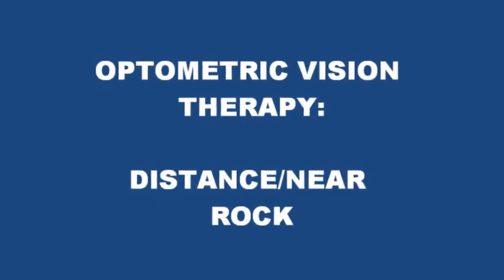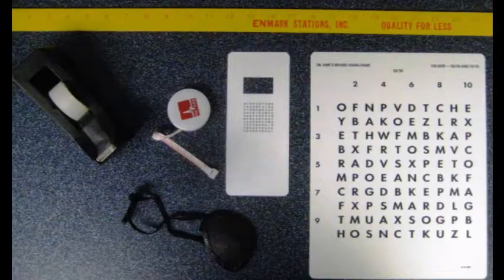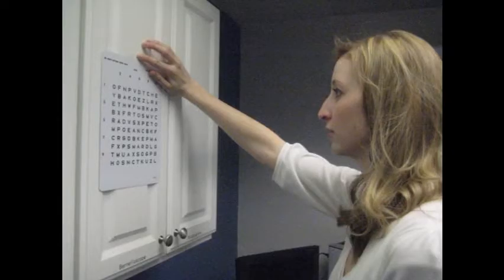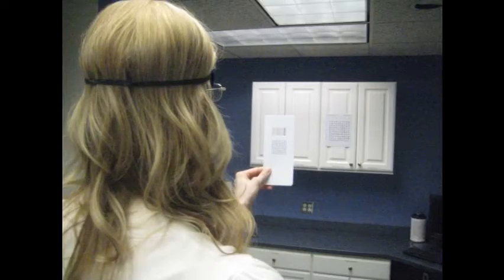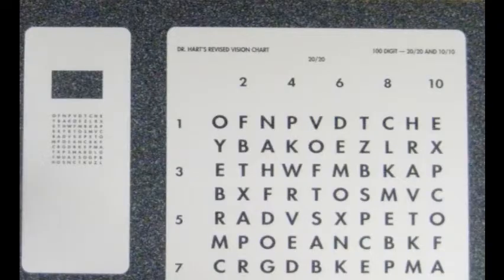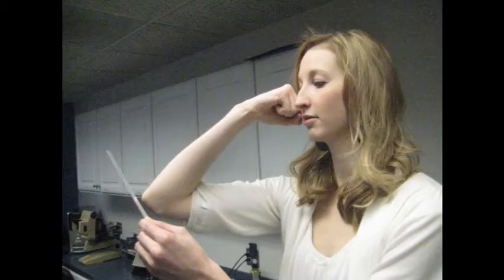Let's begin with distance near rock. For this technique, you will need two heart charts, an eye patch, tape, and a meter stick or tape measure. The larger heart chart is placed on the wall at eye level, 8 feet from where you are standing with a handheld chart. When first practicing this therapy technique, start with the larger letters on each chart. To determine Harmon's distance, hold your knuckle next to your cheek and extend your elbow forward. This is where you should hold the near chart or the chart in your hand.